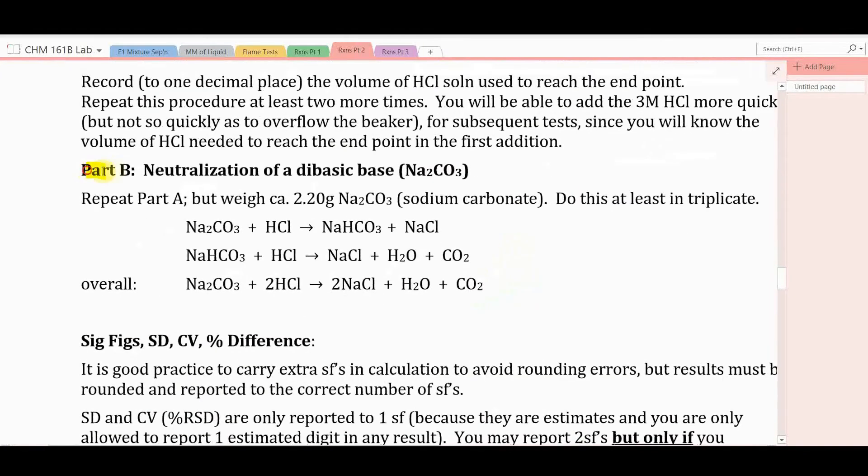In part B of this reaction, you'll be neutralizing a dibasic base, sodium carbonate. And let's look at the reactions. Sodium carbonate will react with one mole of HCl, releasing salt and giving us sodium bicarbonate. Now sodium bicarbonate is still basic to react a second time, using a second mole of HCl, this time now producing sodium chloride, water, and carbon dioxide. So the overall reaction is that sodium carbonate reacts with two moles of HCl, producing two moles of sodium chloride and water and CO2.